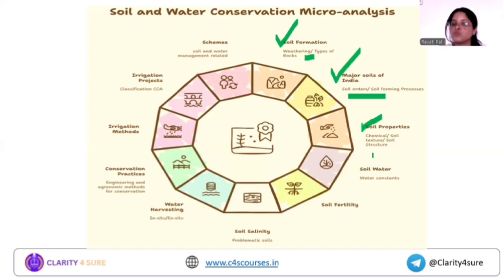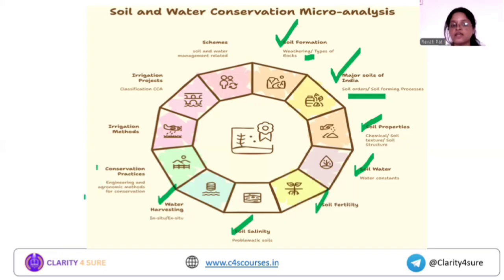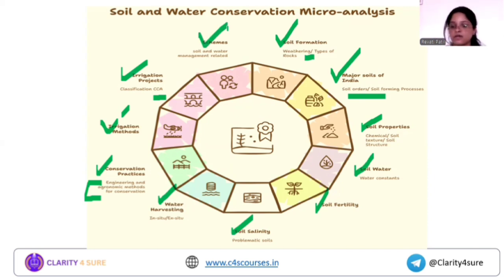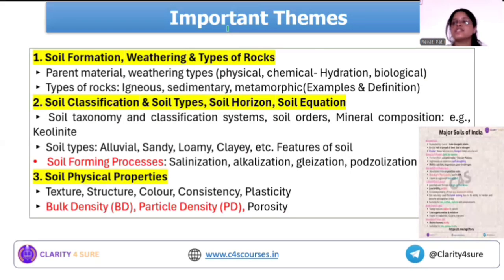Also important: soil water and soil moisture constants, soil fertility, soil salinity, and problematic soils. Then water harvesting — in-situ and ex-situ. Conservation practices including engineering and agronomic measures, with terracing being most repeated. Then irrigation methods, irrigation project classification based on cultural command area (CCA), and soil and water conservation related government schemes.